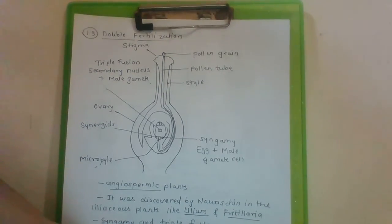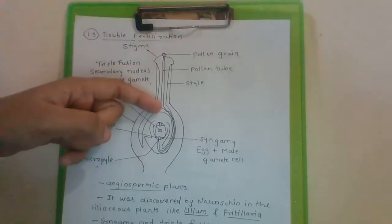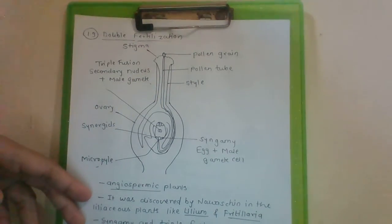But in some cases, it is found to enter through chalaza. This is chalazal end. It is found to enter from chalazal end, so the name of this process is chalazogamy.